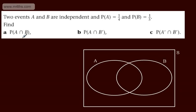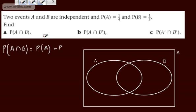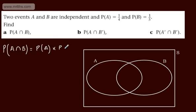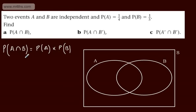We need to find the probability of A intersection B. We know that for independent events, the probability of A intersection B is equal to the probability of A multiplied by the probability of B. So that's going to be 1 over 4 multiplied by 1 over 5, which gives us 1 over 20.